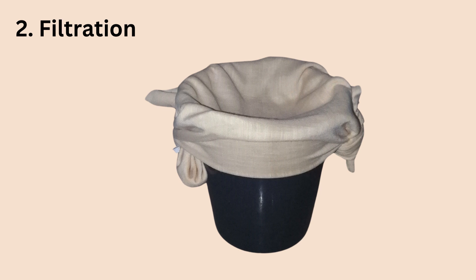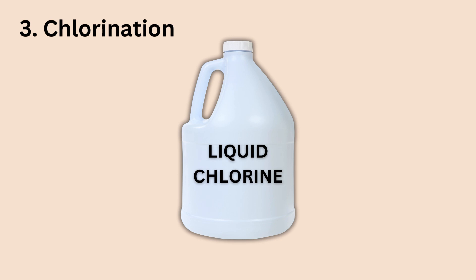But does that mean the water is ready for drinking? Not yet, because there could still be germs in the water. How do we get rid of those germs? This brings us to the number three method: chlorination. Chlorine is a chemical that helps to kill germs. You can add a few drops of chlorine to the water, let it settle for about 30 minutes, and then it's ready for drinking.